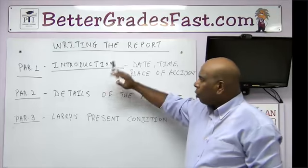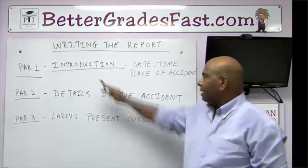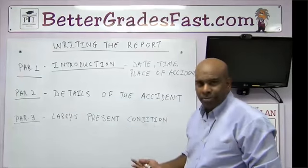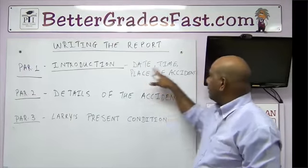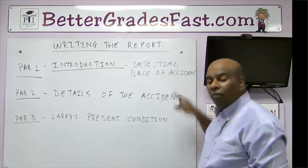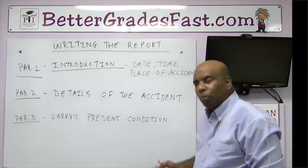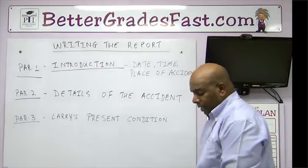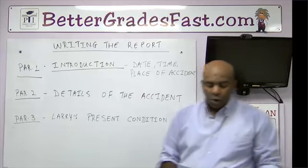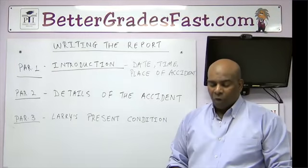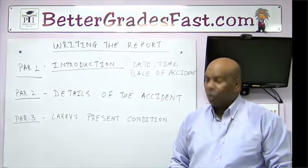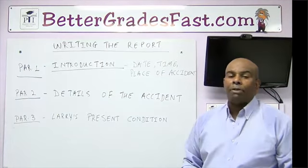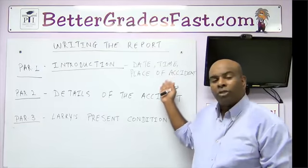Paragraph 1 is always the introduction, where we introduce the reader to the topic. In a report we're looking at the date, time, and place of the accident. So paragraph 1 would read something like this: 'Larry Briscoe, a 15-year-old student from Coquerico High School, was involved in an accident on April 10th around 3 p.m. at the intersection of Queen and Mary streets.' That's all we need for our introduction.